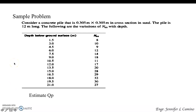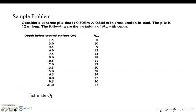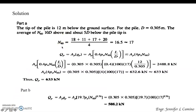Sample problem: Consider a concrete pile that is 0.305 m by 0.305 m in cross-section in sand. The pile is 12 meters long. The variations of N sub 60 with depth are given. We have depth below the ground surface with corresponding N sub 60 values. Estimate the point bearing capacity Q sub P. We need to get the average N sub 60 — 10D above and about 5D below the pile tip.